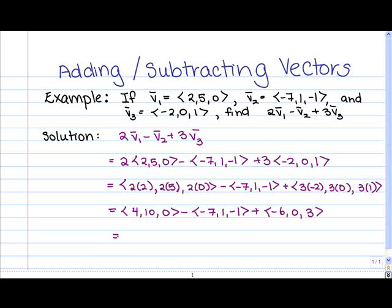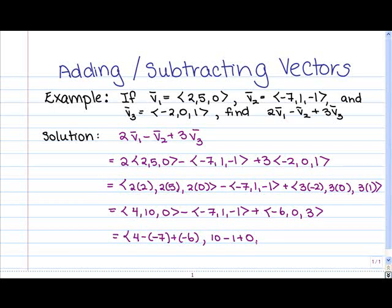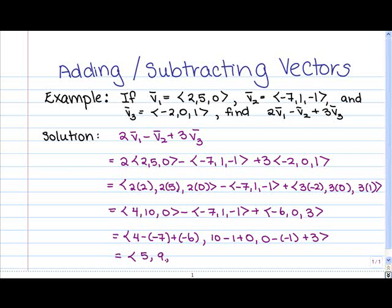In order to add and subtract these, we deal with one component at a time. For the first component: 4 minus (-7) plus (-6). For the second component: 10 minus 1 plus 0. For the third component: 0 minus (-1) plus 3. Simplifying: 4 plus 7 is 11, minus 6 gives 5. Then 10 minus 1 plus 0 gives 9. And 0 plus 1 plus 3 gives 4.